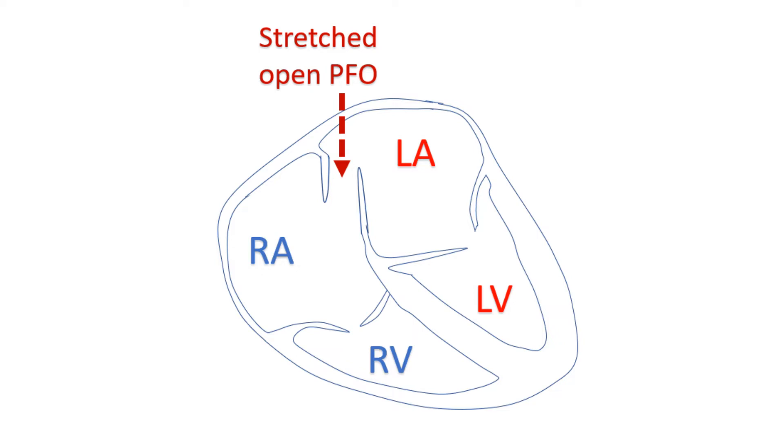When the PFO is stretched open, blood can flow either way depending on which side has the higher pressure. If it is the left atrium which is enlarged, the stretched-open PFO will shunt blood in a left-to-right direction, and vice versa.